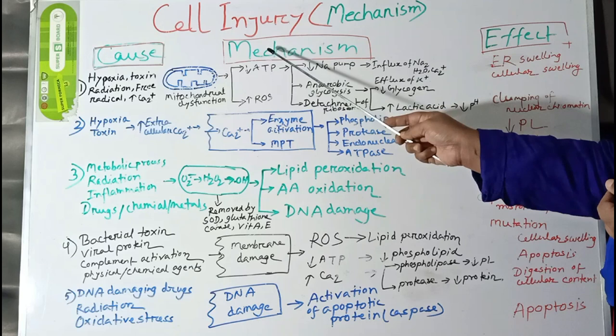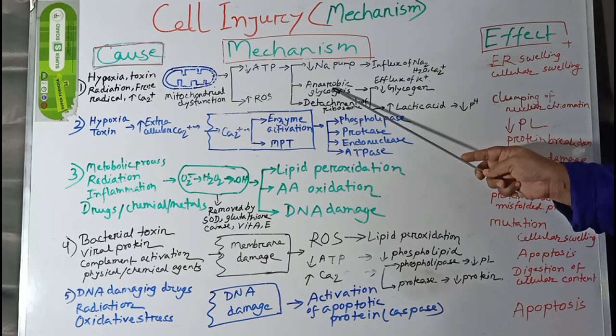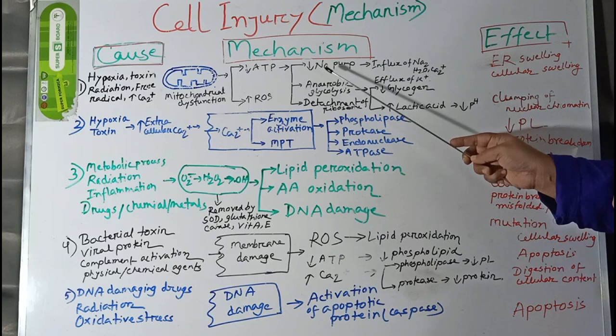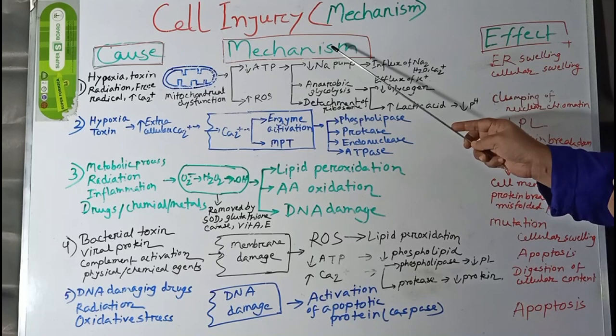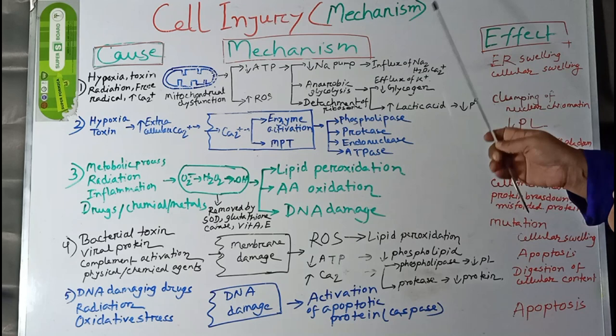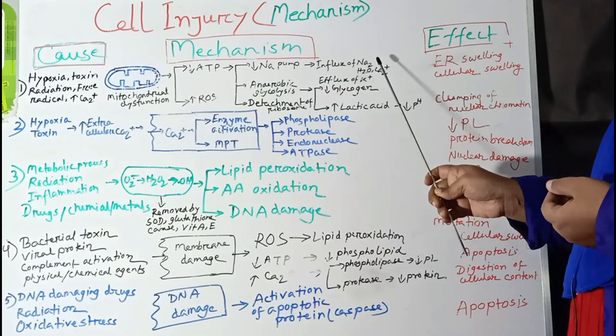The widespread deleterious effects of ATP depletion include decreased sodium-potassium pump activity in the cell membrane, alteration of cellular metabolic pathways, and disruption of protein synthesis. Due to ATP depletion, the active transport system is interrupted, so sodium along with water goes inside the cell and potassium diffuses out. Influx of sodium and water causes endoplasmic reticulum and cellular swelling. Failure of the calcium pump also causes calcium to accumulate within cells.